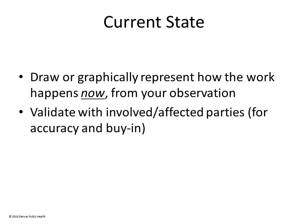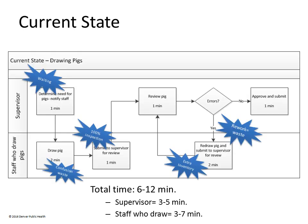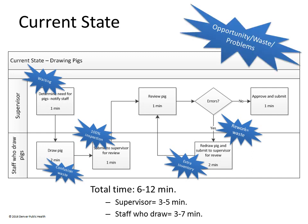Now that they have their background information, they need to show how the work currently happens and confirm it is correct with everyone involved in the process. They can use process maps, spaghetti diagrams, data graphs, Pareto charts, or other quality improvement tools. The current process at the Pig Drawing Company is mapped with the top row showing supervisor tasks and the bottom row showing staff tasks. After mapping the current process, you should label problem areas and opportunities for improvement — these are called Kaizen bursts. You can either draw or insert the map into the A3.